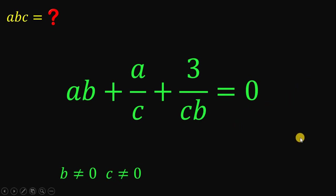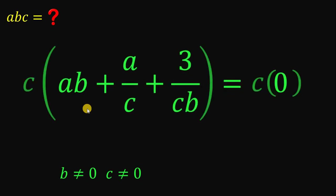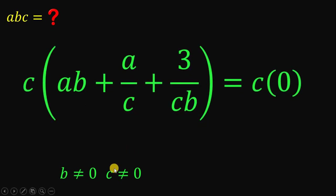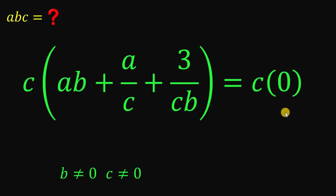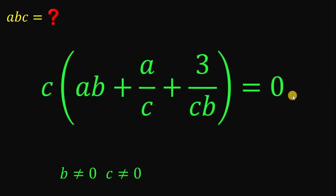Since we want the value of the product a, b, c, we'll multiply both sides by c. This is valid because we know c is not equal to 0, so it's safe to multiply both sides by c. The right-hand side is just 0, since c times 0 is 0.